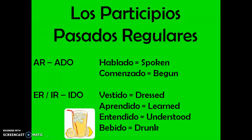Say them with me, please. Hablado — spoken. Comenzado — began. For ER and IR verbs we have examples with -ido: vestido — dressed; aprendido — learned; entendido — understood; bebido — drunk. If you have trouble translating them, just put an imaginary 'have' in front: have spoken, have begun, have dressed, have learned. That way you'll understand how to translate them correctly to English.